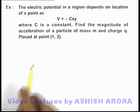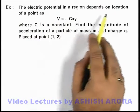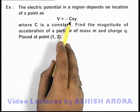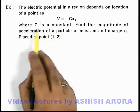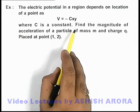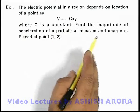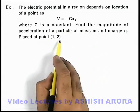In this example, we are given that the electric potential in a region depends on location of a point as V = -Cxy, where C is a constant. We are required to find the magnitude of acceleration of a particle of mass m and charge q placed at point (1, 2).